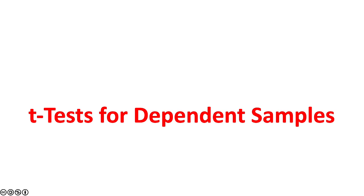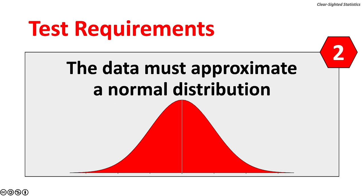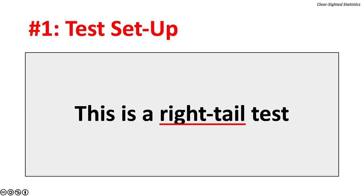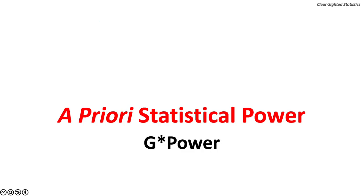The last two-sample test is the t-test for dependent samples, requiring two conditions: the samples must be dependent (measurements from one affect the other), and the data must approximate a normal distribution. The CEO of Ivy League Test Prep wants to determine whether clients who completed the SAT program increased their scores. This is a right-tail test, and a dependent sample t-test because it measures performance before and after an intervention — completing the program.